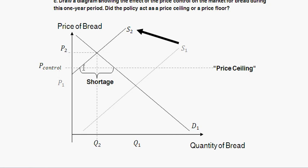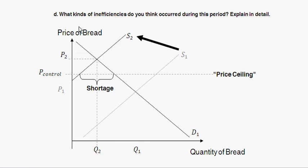The simple result is that at the controlled price, quantity supplied is lower than quantity demanded. Moving to Part D on inefficiencies: the list is in your textbook under a section like 'How a Price Ceiling Causes Inefficiency.' The first and most obvious inefficiency is inefficiently low quantity — quantity supplied is less than quantity demanded, creating a shortage where people willing to buy bread at that price simply can't find any.